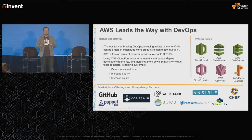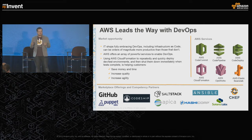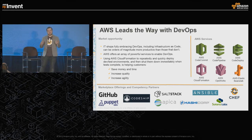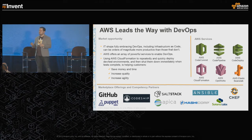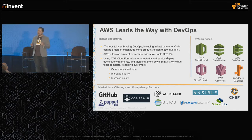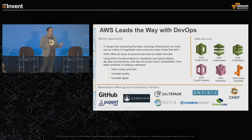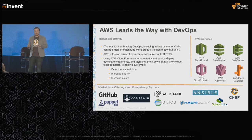We also have Elastic Beanstalk, which lets you take your code — whether PHP, Python, Ruby, .NET, Node.js, Go, or a Docker container — and send it to the service. It deploys it, sets up your EC2 instances, ELBs, and RDS instances for you. We also have marketplace offerings from partners like GitHub, PuppetLabs, SaltStack, Ansible, and Chef, which you can use alongside our services.